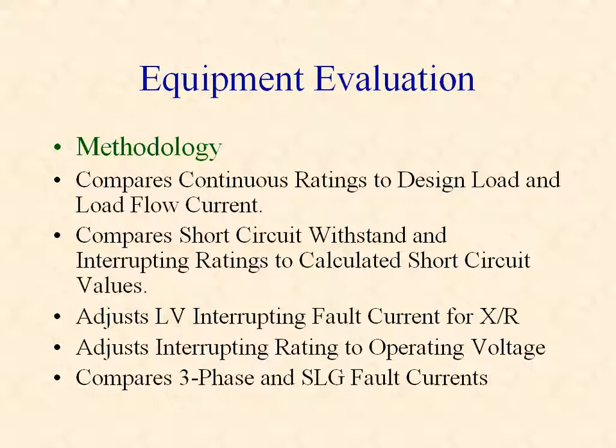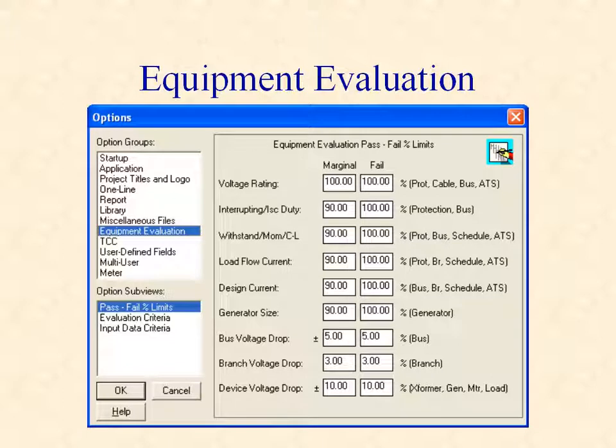Similar adjustments are made to equipment ratings for older, medium, and high voltage equipment when the application voltage doesn't match the equipment voltage rating. Since single line-to-ground fault currents may exceed three-phase fault currents, both values are used in the evaluation. Pass, fail, and marginal criteria may be set for each category of evaluation. For example, you may choose to list equipment as marginal if the calculated short circuit value is within 10% of the equipment rating, which would help you in new designs to add larger safety margins for future growth at minimal cost.